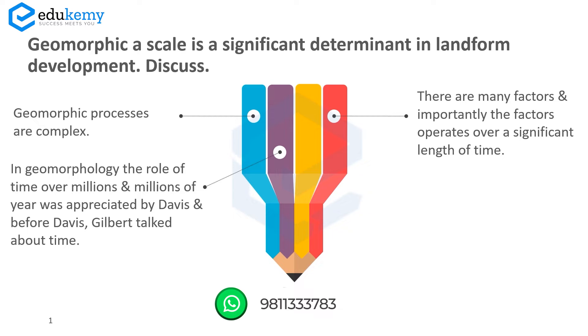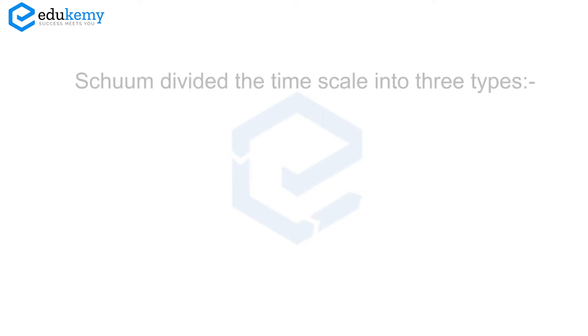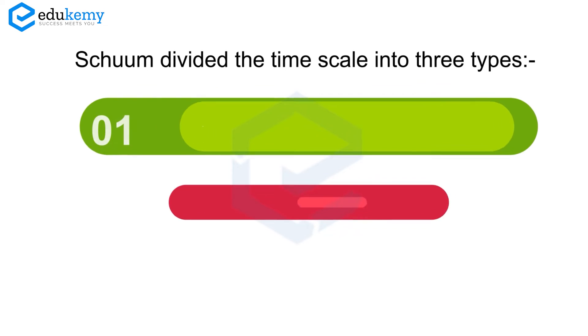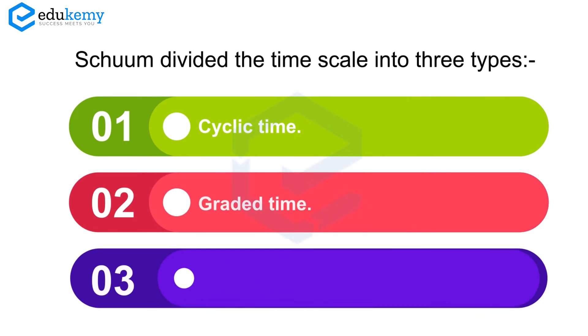Before Davis we also had Gilbert who talked about time, but Schumm (S-C-H-U-M-M) divided the time scale into three types. We had cyclic time, we had graded time, and we have steady-state time.